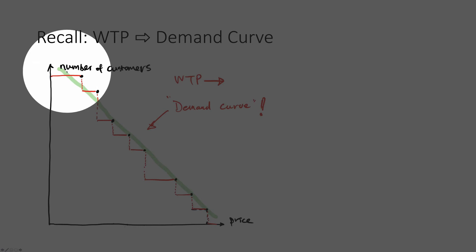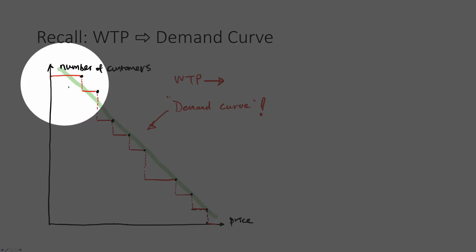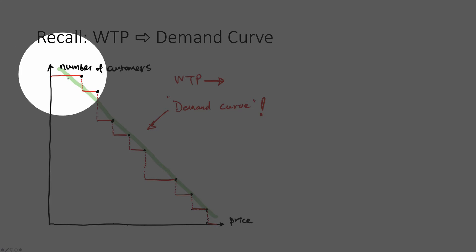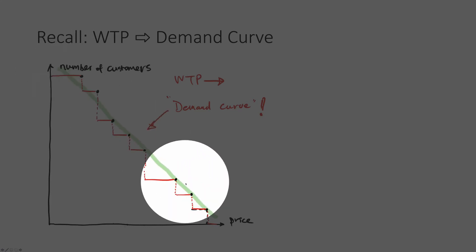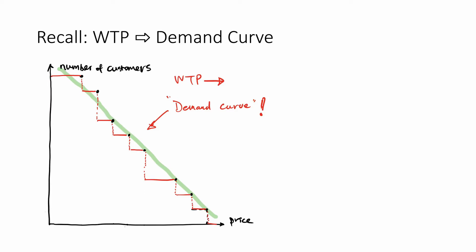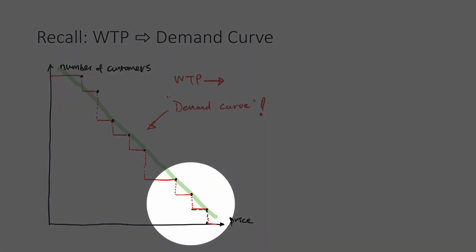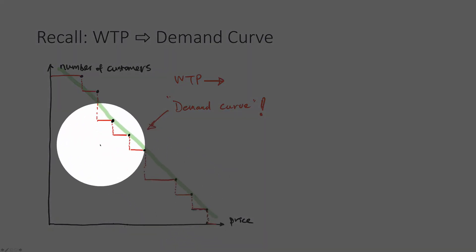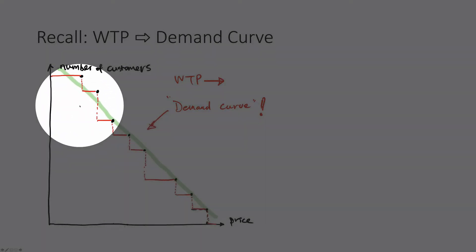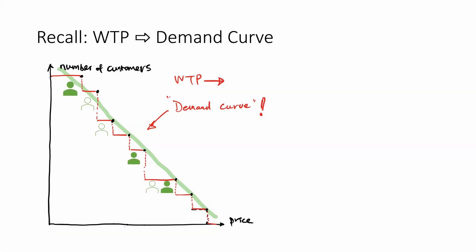But when you increase the number of customers, the staircase would become finer and finer, and eventually it would actually look like a straight line. This is the demand curve we will talk about more in this class. Since willingness to pay gives us the demand curve, you may treat each one of these staircases as an individual. Different individuals have different willingness to pays, and therefore they would buy the product at different prices.